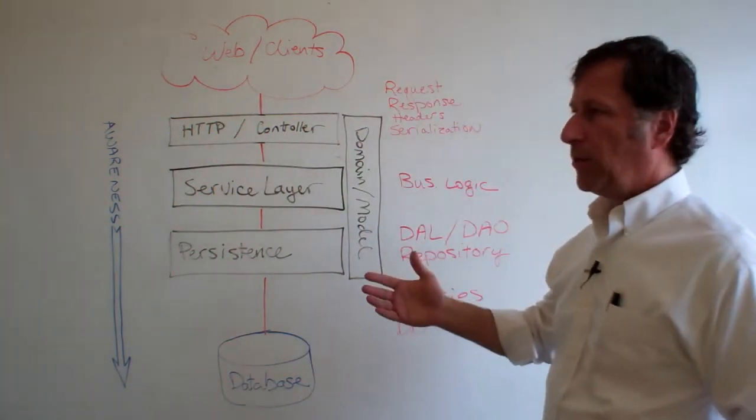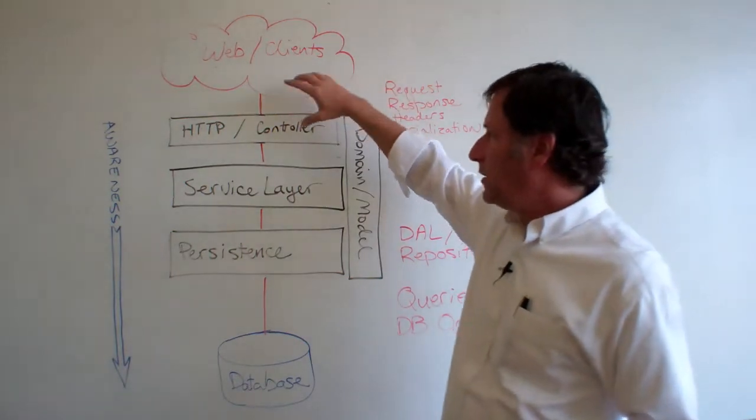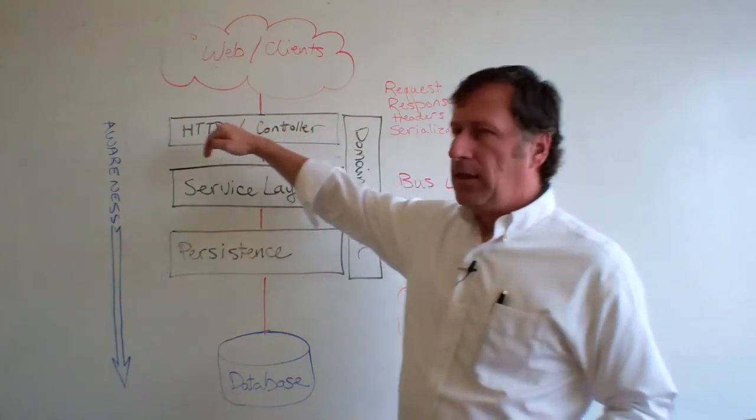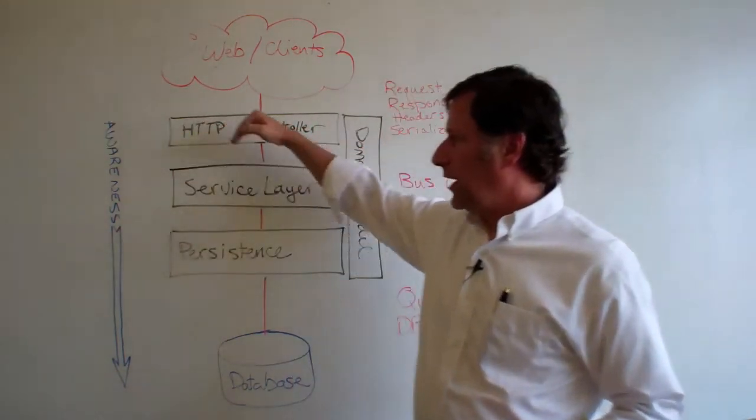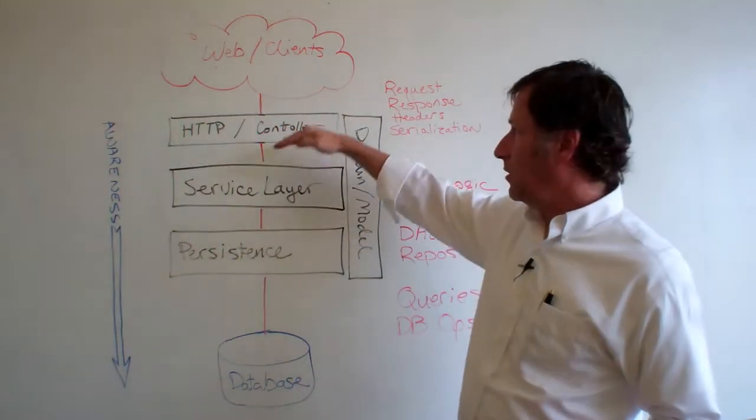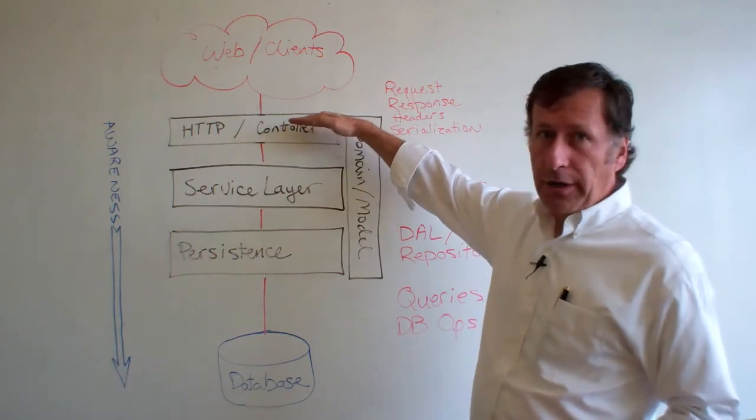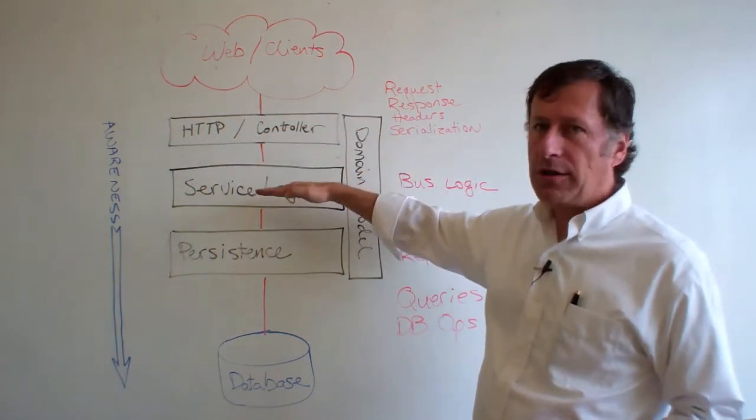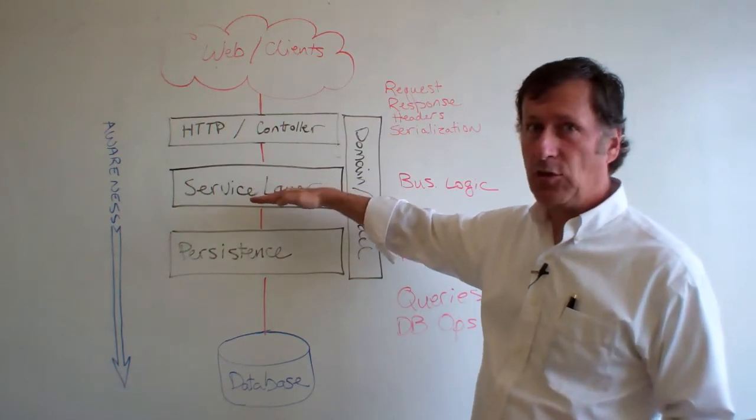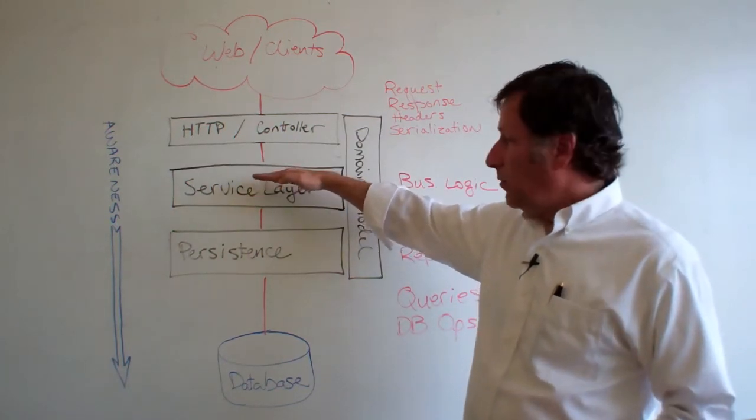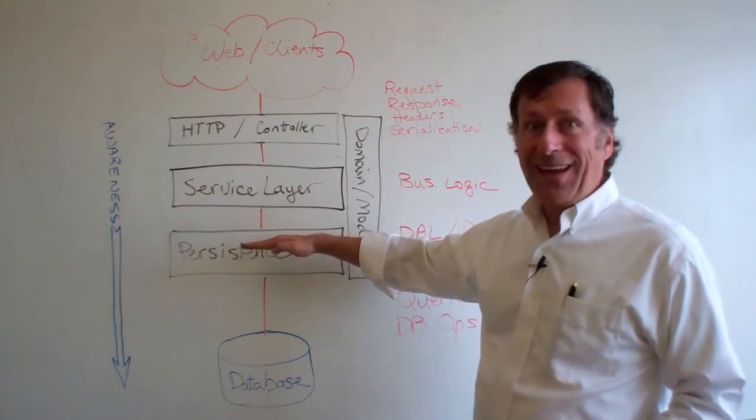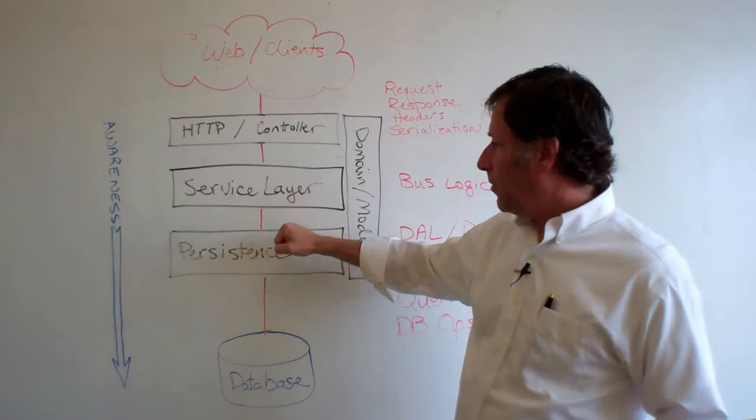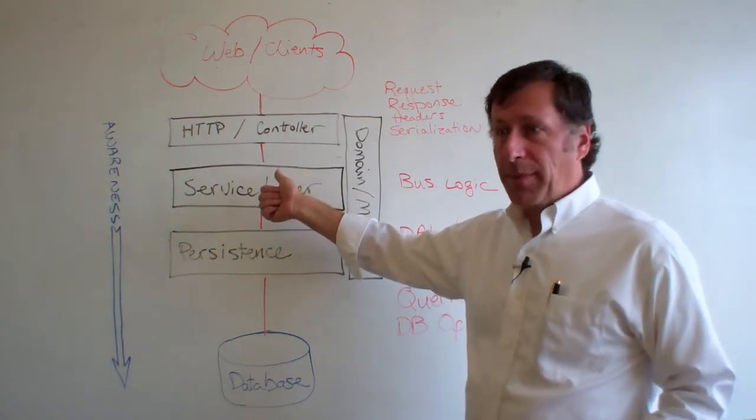So let's just talk about them quickly. First, I want to mention, though, that each layer, although it's distinct, the awareness of the layers goes down. In other words, this layer only knows about this layer and can only make calls of this layer to make it do things. Same thing with this layer. It can make calls on this layer to make it do things. It doesn't go back up. This layer can't call the layer above it.